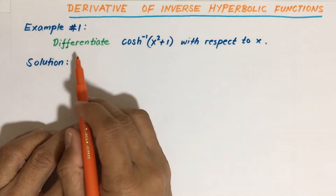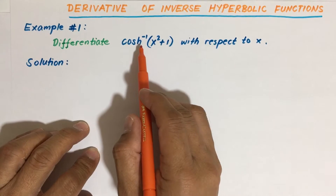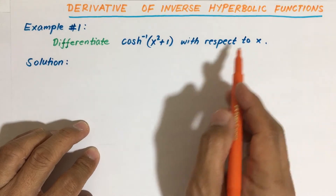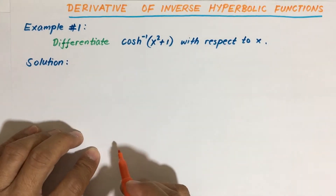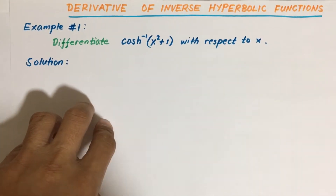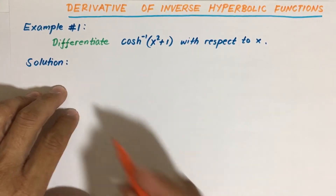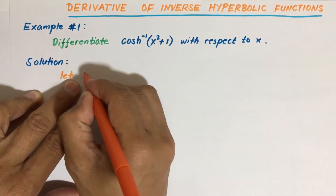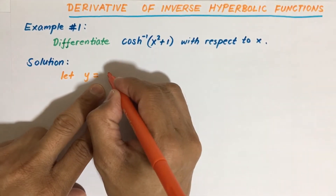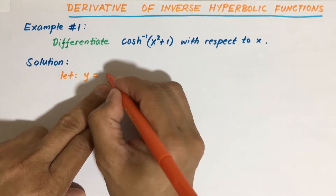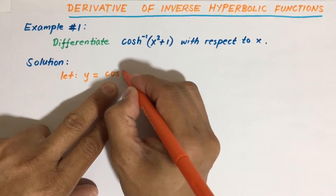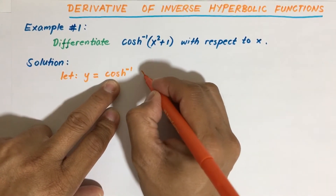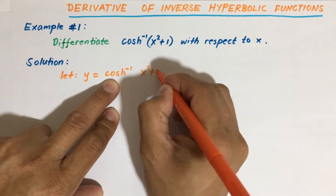So we will solve some examples on the derivative of inverse hyperbolic functions. Example number one: differentiate the inverse hyperbolic cosine of x squared plus 1 with respect to x. For our solution, let y be equal to inverse hyperbolic cosine of x squared plus 1.